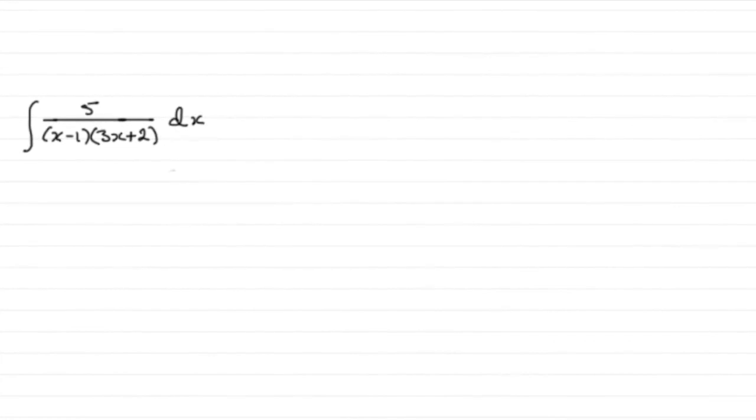Now for this question, we're asked to find the integral of 5 divided by (x minus 1) times (3x plus 2). And to do this, what I'd normally want to do is just change this into partial fractions.